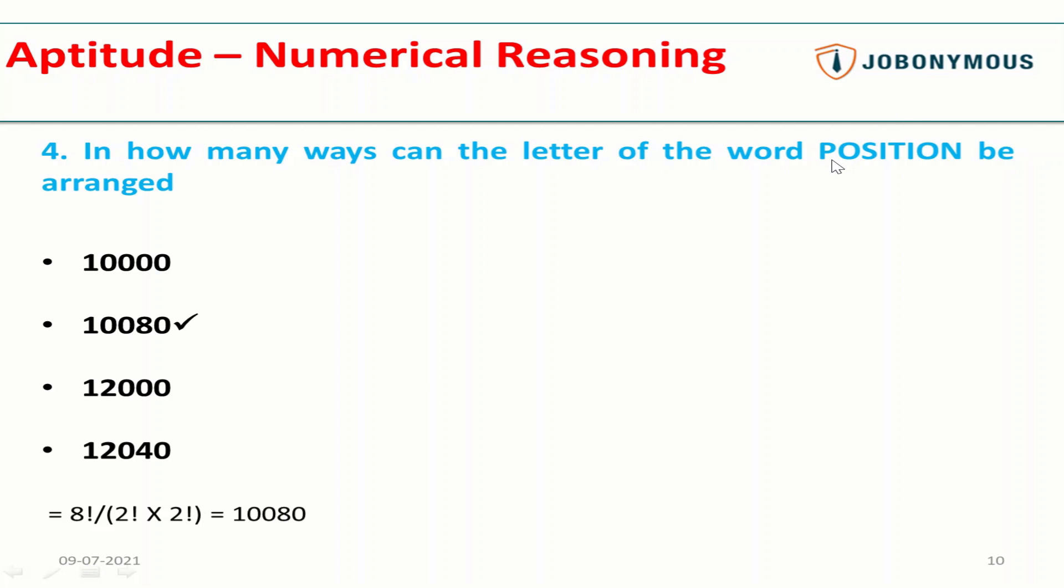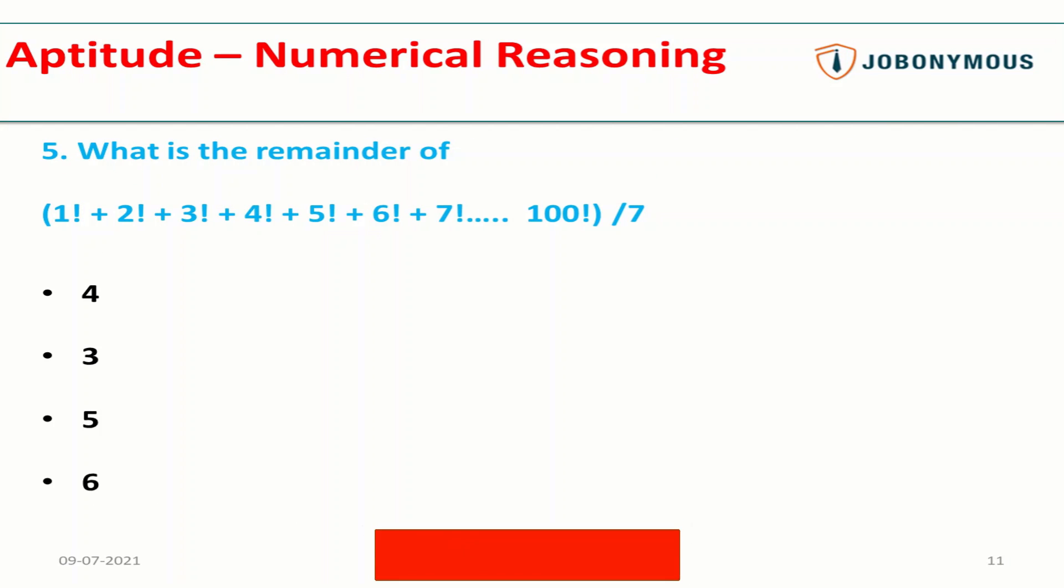...the number of letters that are similar. So there are two O's that are similar and two I's that are similar, so it's two factorial times two factorial. Whatever similar letters you get, you divide by their factorial to get the actual answer. So it is eight factorial divided by two factorial times two factorial. In case you don't know, factorial is pretty simple: one factorial is 1, two factorial is 2 × 1, three factorial is 3 × 2 × 1. Whatever factorial is given to you, you multiply it with previous numbers. So four factorial will be 4 × 3 × 2 × 1.